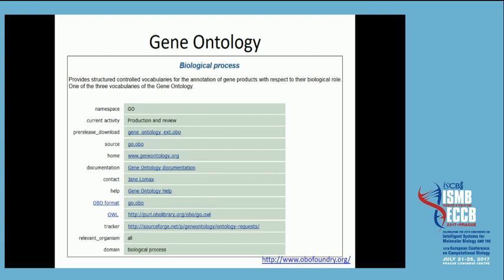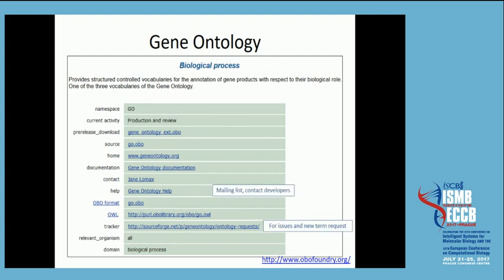This is just the information you'll find for every ontology on the Foundry website — things like mailing lists, contact developers, etc. The OBO Foundry principles, roughly, I would separate into things that are common sense and uncontroversial: they need to be open so that other people can reuse them, there needs to be a common format such as OWL and OBO, identifiers that are standardized, versioning, some documentation, and you need to be able to contact someone.